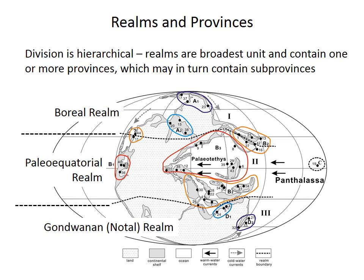This division of realms and provinces is hierarchical, where realms are the biggest unit and they can contain provinces. This Permian brachiopod example shows three realms: the northern boreal, the tropical paleo-equatorial realm, and the southern Gondwanan — or sometimes called notal — realm. Those are subdivided into provinces like A, B, C, and D on the map, and those provinces themselves can then be divided into subprovinces like A1 or A2.